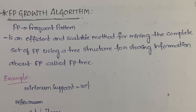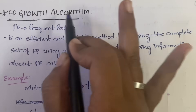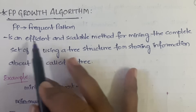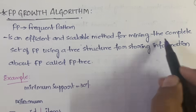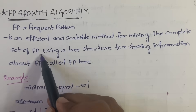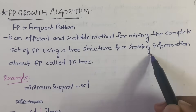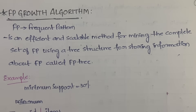First of all, what do you mean by FP Growth? FP is nothing but Frequent Pattern — Frequent Pattern Growth algorithm. It is an efficient and scalable method for mining the complete set of frequent patterns, using a tree structure for storing the information about the frequent patterns, which is called the FP tree.